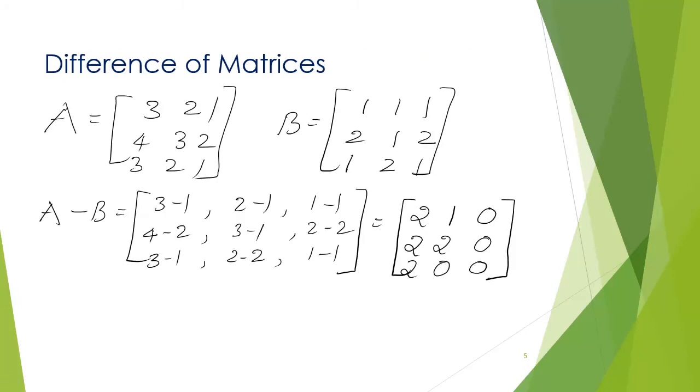Difference of matrices. Let matrix A be 3, 2, 1, 4, 3, 2, 3, 2, 1. And let matrix B be 1, 1, 1, 2, 1, 2, 1, 2, 1.